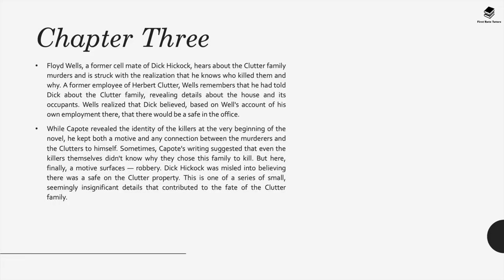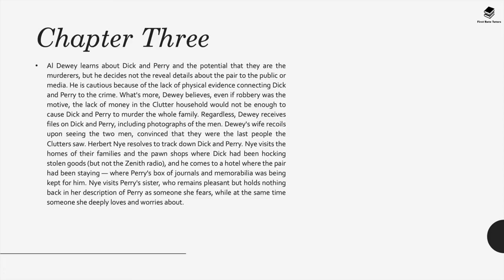The motive: robbery. Dick Hickok was misled into believing there was a safe on the Clutter property. This is one of a series of small, seemingly insignificant details that contributed to the fate of the Clutter family. Albert learns about Dick and Perry as potential murderers but decides not to reveal details to the public or media, cautious because of the lack of physical evidence connecting the pair to the crime. Even if robbery was the motive, Dewey believes the lack of money in the Clutter household would not be enough cause for murder. Regardless, Dewey receives files and photographs of the men.